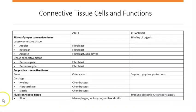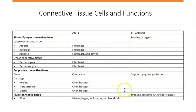Since we have all these different tissues in our body, that provides all these different functions. For example, binding of organs — that's the fibrous tissue. Support, physical protection — that would be bones. Immune protection — that would be the blood.